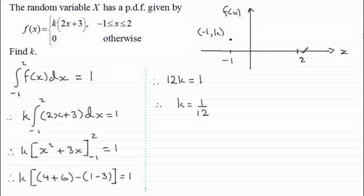When we go across to 2, we know it's going to be a straight line. So I only need this far point here. So when x is 2, we've got 2 times 2 is 4 plus 3 is 7, 7k.